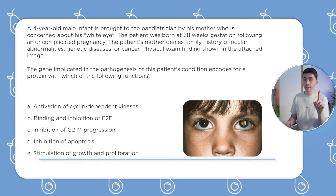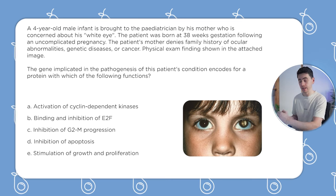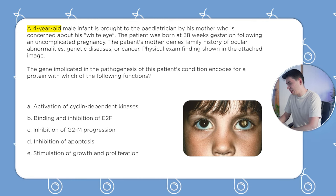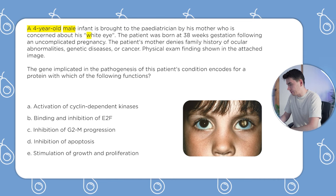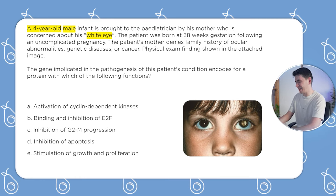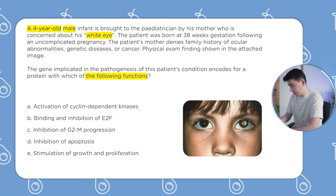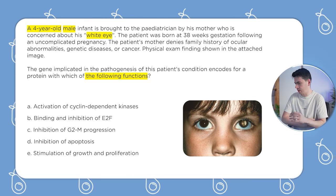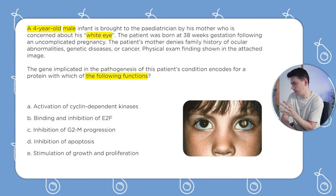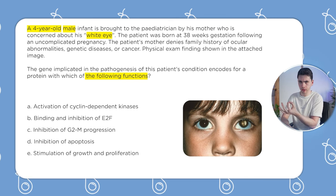Step one is to read the question and highlight the most important information to get the answer. What stands out to me — I like to highlight the age, the gender is typically important, and they're presenting with a white eye. Everything else seems normal; I typically don't highlight things that are normal. The question is asking for the function of the gene. So we've highlighted four-year-old male with white eye, and we're looking for the function of that gene.